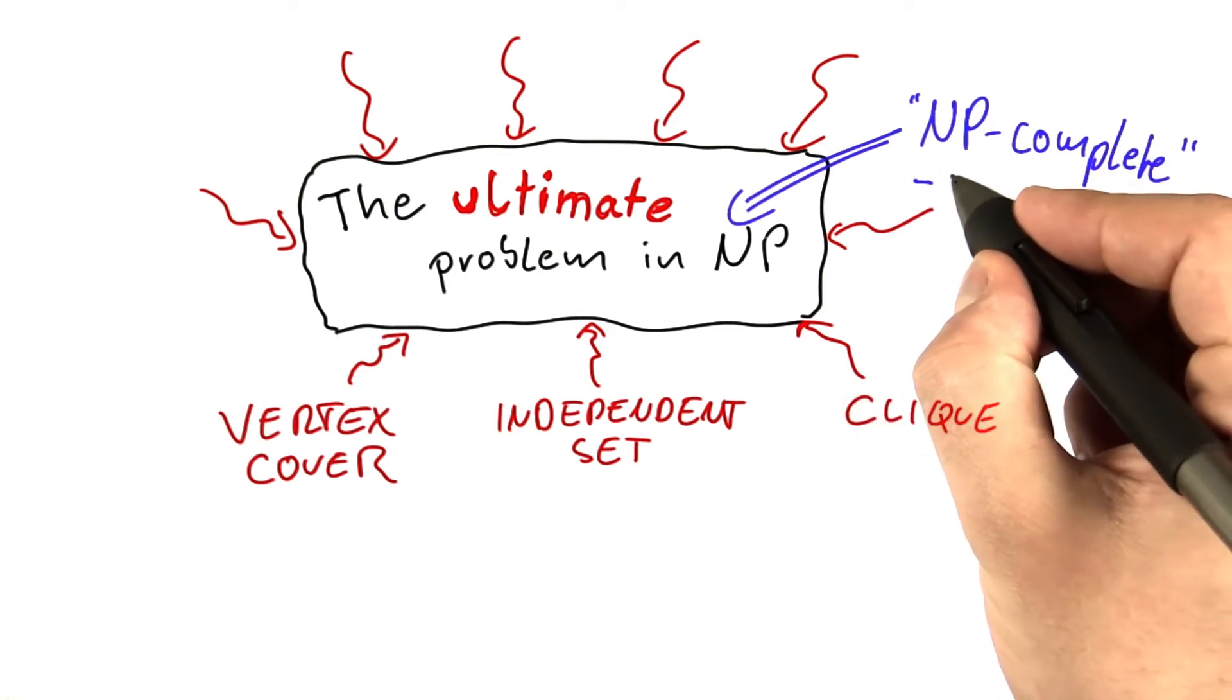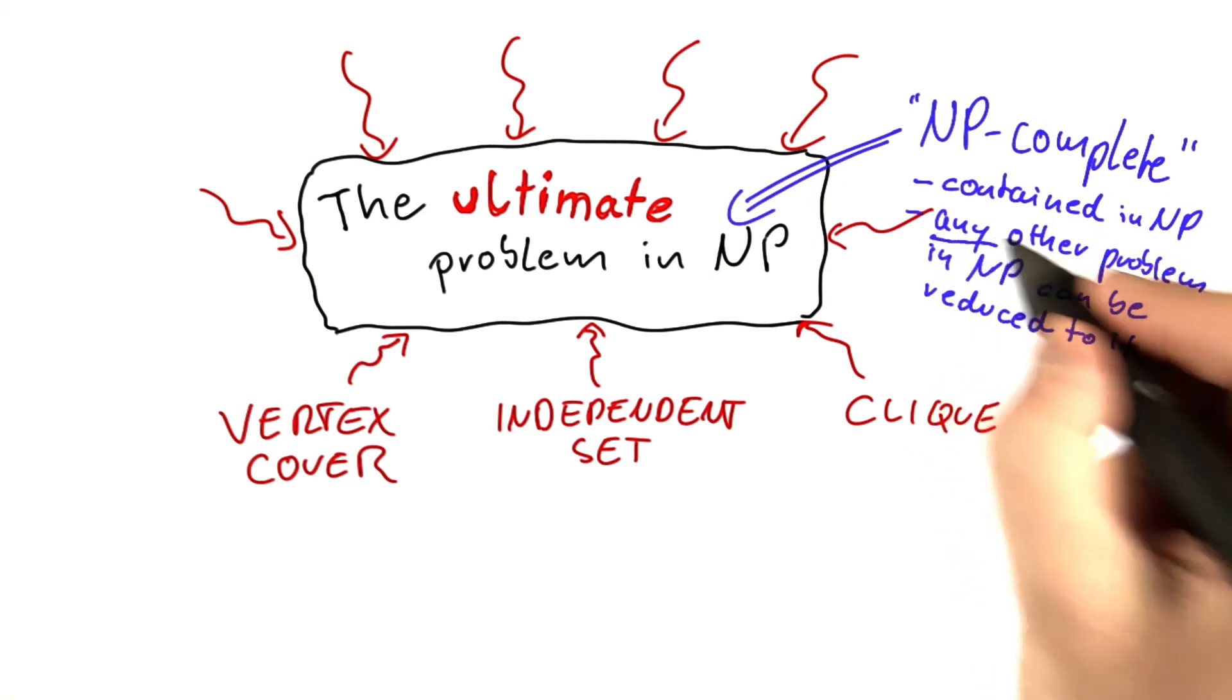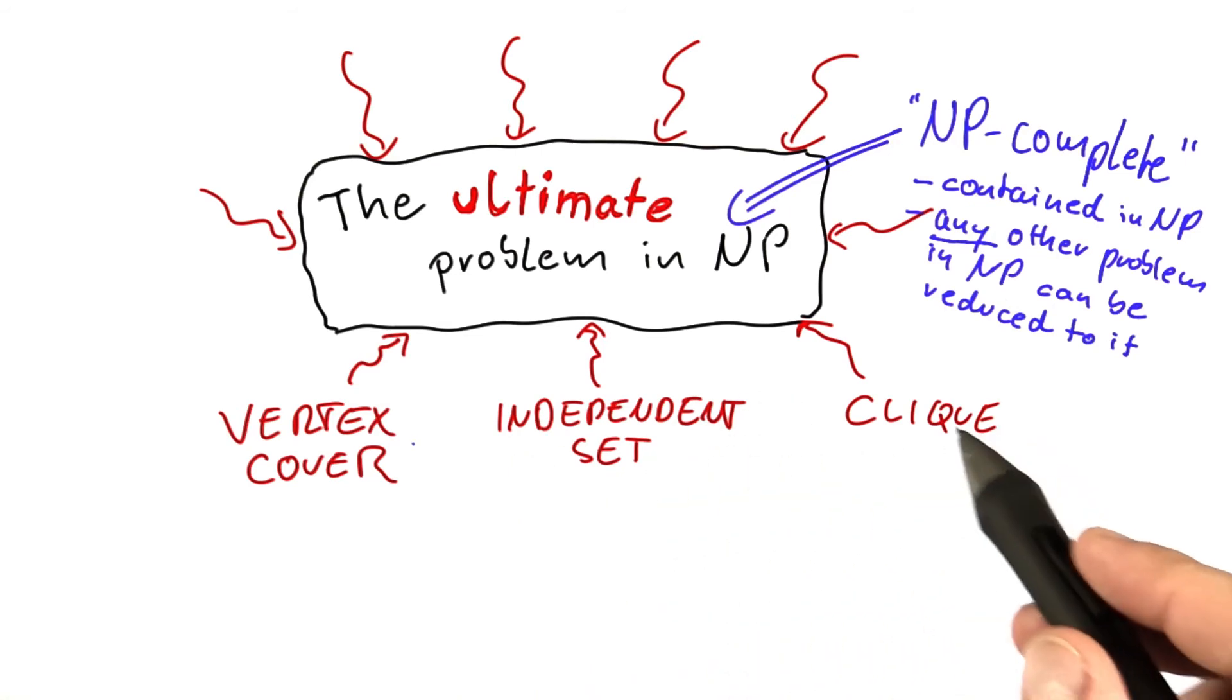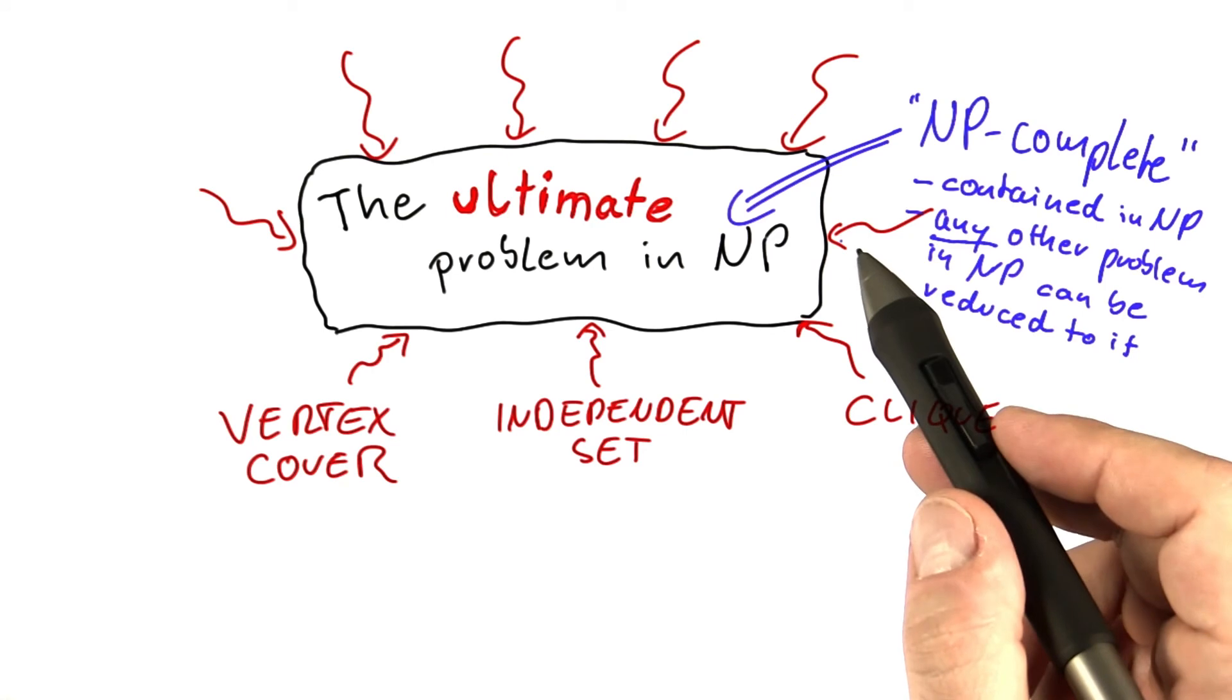So an NP-complete problem is contained in NP. And the important part here is that really any other problem in NP can be reduced to it. So not just vertex cover, not just independent set, not just clique, but any problem that lies in NP can be reduced to that problem.